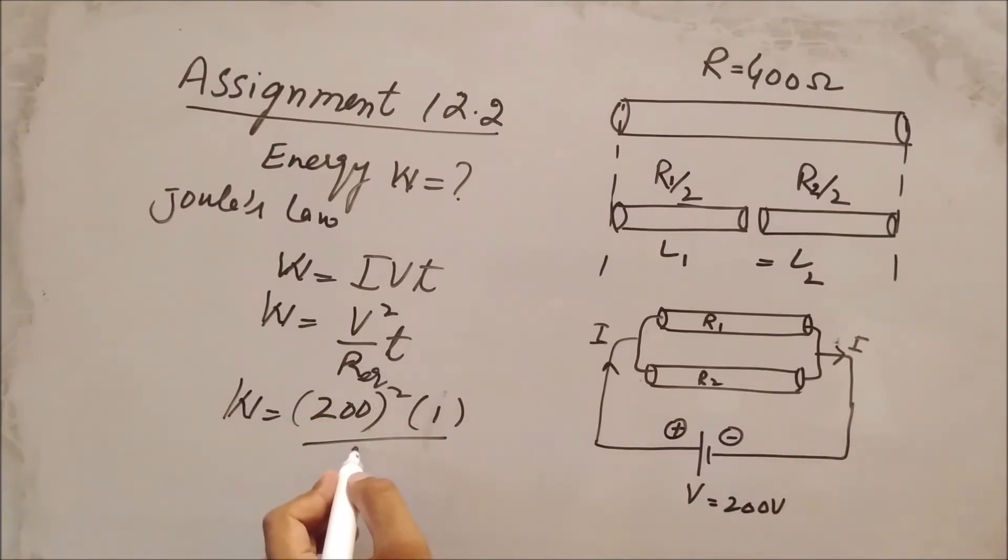200 squared is 40,000, and 40,000 divided by 100 gives the energy: 400 Joules. This is the required answer.